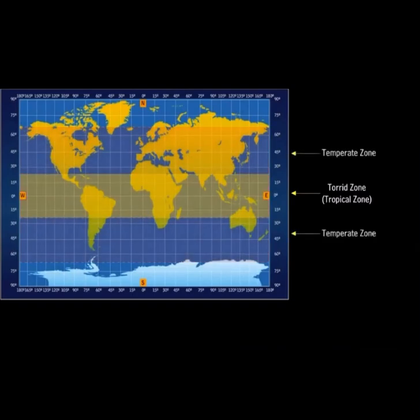The temperate zone lies between the hot and the cold zones. Its location is between the Tropic of Cancer and the Arctic Circle in the Northern Hemisphere and between the Tropic of Capricorn and the Antarctic Circle in the Southern Hemisphere.